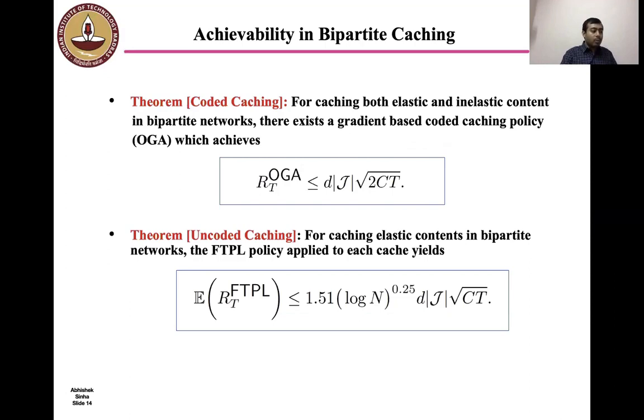Next, we prove the achievability results. The achievability results are divided in two parts. One for coded caching, another for uncoded caching. For the case of coded caching, the first theorem states that the online gradient based coded caching policy proposed by Georgius et al. in a previous paper achieves the regret bound given by d|J|√(2CT). And this regret bound is valid for both elastic and inelastic content. The second achievability theorem concerns uncoded caching for inelastic contents. It states that by employing the FTPL policy at each of the J caches individually yields the expected regret bound 1.51 log(N)^0.25 d|J|√(CT). The proof of the second theorem again uses a result by Cohen et al.